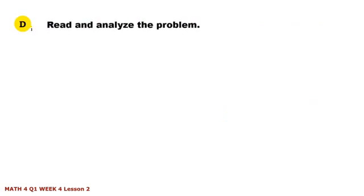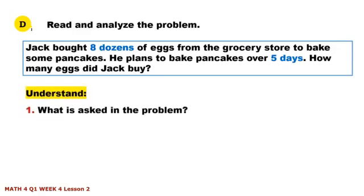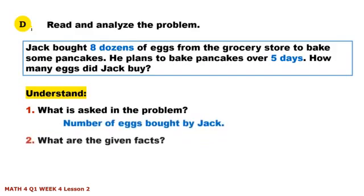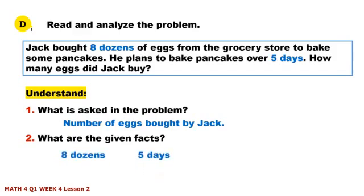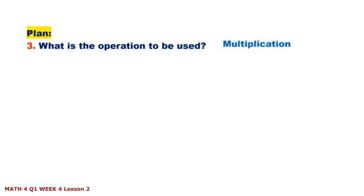Read and analyze the problem: Jack bought eight dozens of eggs from the grocery store to bake some pancakes. He plans to bake pancakes over five days. How many eggs did Jack buy? Understand: What is the problem asking? The number of eggs bought by Jack. What are the given facts? Eight dozens and five days. What operation will be used? Multiplication.